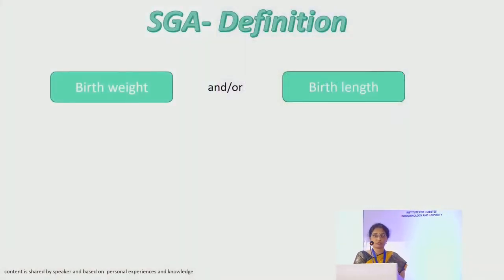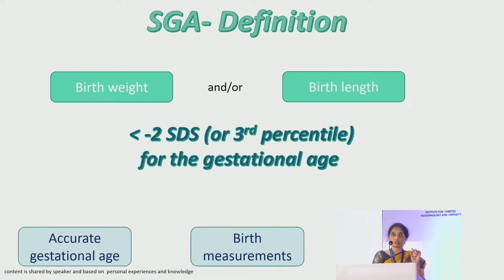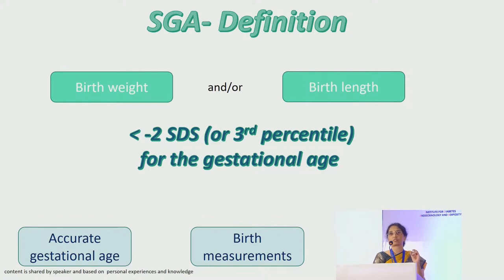The definition of small for gestational age is either the birth weight, the birth length, or both being less than two standard deviations — that is less than the third percentile — for gestational age. This is mostly a clinical diagnosis, with no particular formulas or investigations to prove it. It requires an accurate gestational age, determined by correct last menstrual period or first-trimester ultrasound.